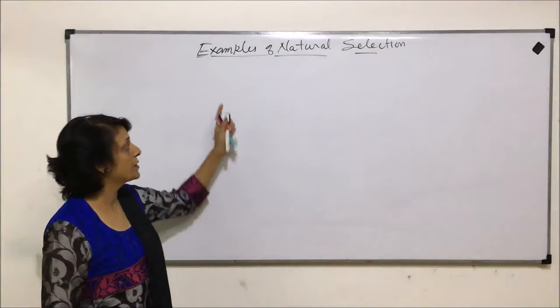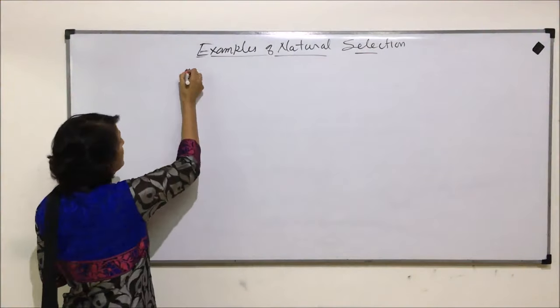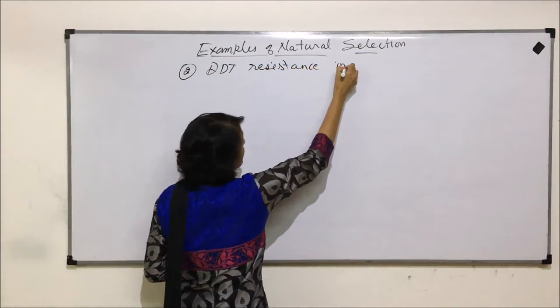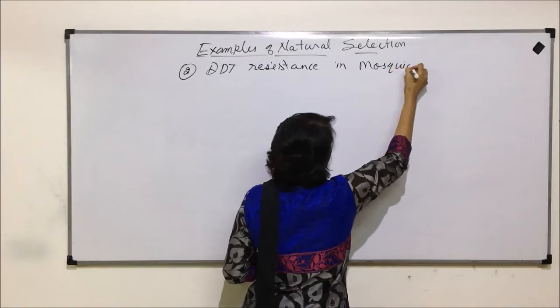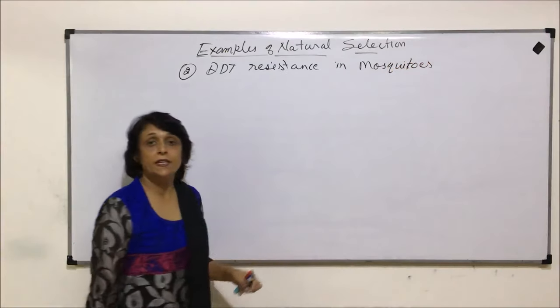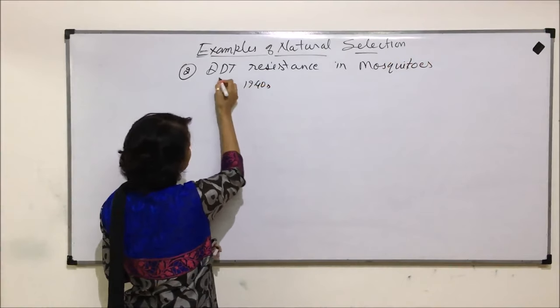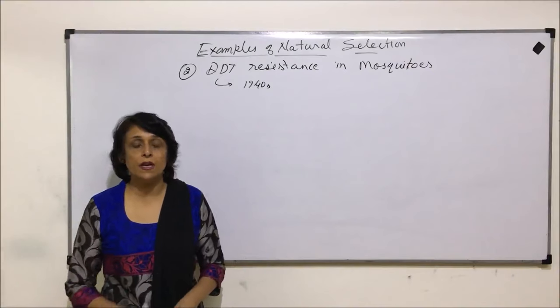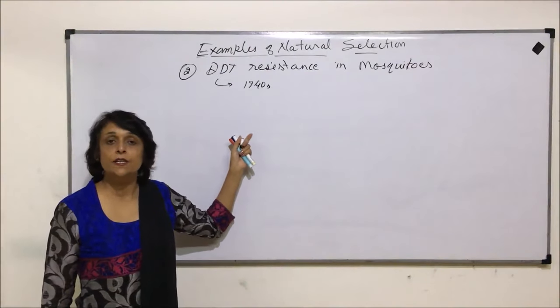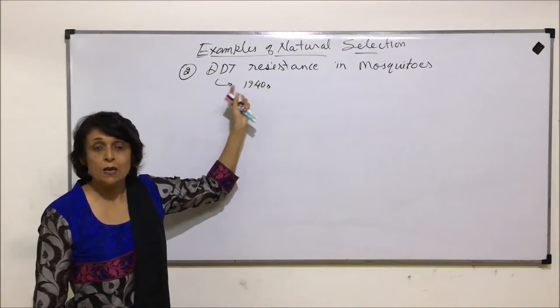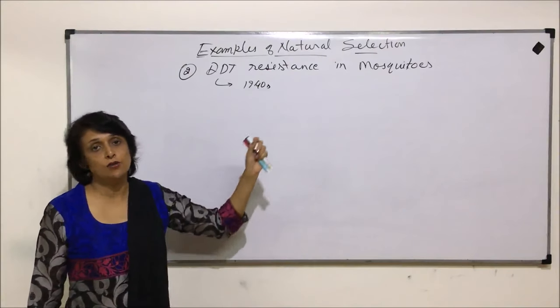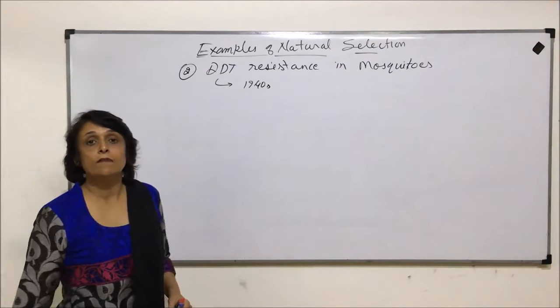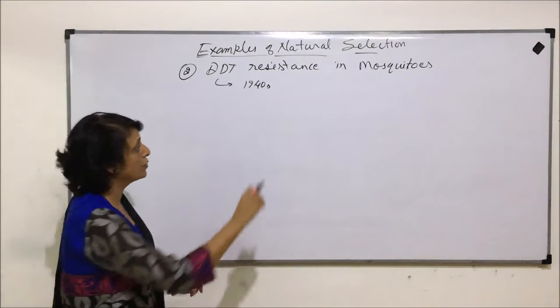Let us talk about some more examples in support of natural selection. The second one is DDT resistance in mosquitoes. DDT was introduced in 1940s to destroy these mosquitoes because their number was increasing at a very fast pace. Initially when DDT was used, though it is a pesticide, it proved to be very effective in destroying these mosquitoes. According to Darwin, there are variations which exist in a population, so the population of mosquitoes had variations.